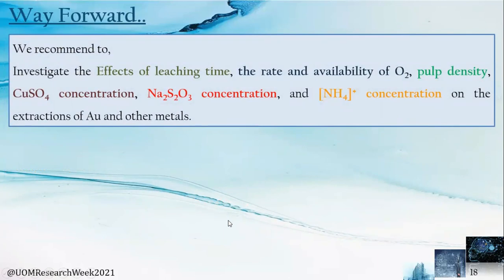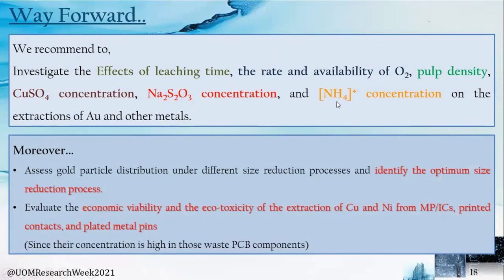Let me give some recommendations based on this study. The main recommendation is to investigate all leaching parameters and solution concentrations — including the effect of leaching time, rate and availability of oxygen, pulp density, thiosulfate and ammonium concentrations — with respect to gold leaching from e-waste, as we were unable to do these investigations due to the pandemic. We also recommend identifying the optimum size reduction process by assessing different comminution techniques. Additionally, we recommend evaluating the economic viability and eco-toxicity of copper and nickel selective extraction processes, as the recovery potential of these two metals was exceptional.